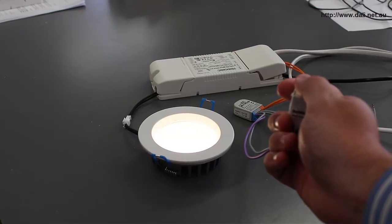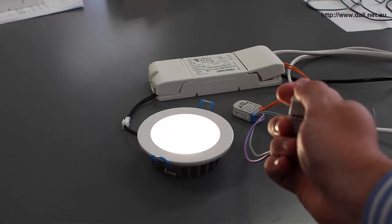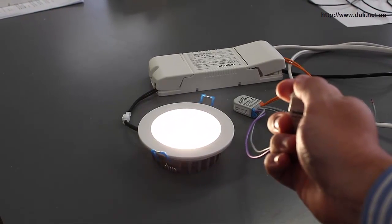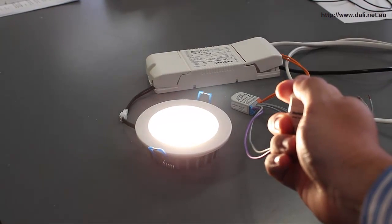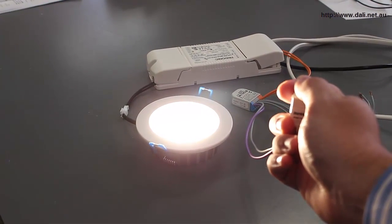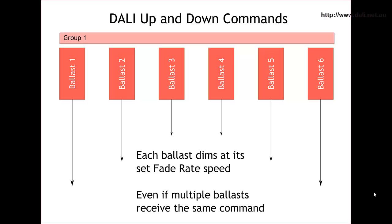As a quick troubleshooting tip, if you are having trouble with Dali lights not responding quickly enough when they are manually dimmed, you should check the fade rate setting of the ballast and make sure that they are not set too low. Because each ballast has its own fade rate, it is possible to have multiple lights dim at different speeds with a button press.